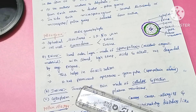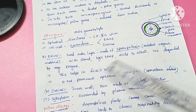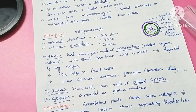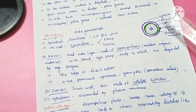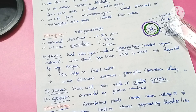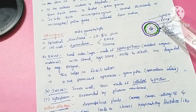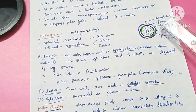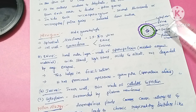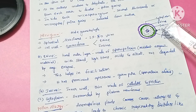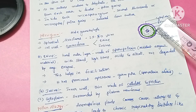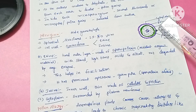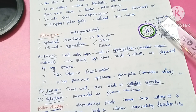There is a prominent aperture in the exine called the germ pore. At the germ pore, sporopollenin is absent, leaving an opening in the exine layer.